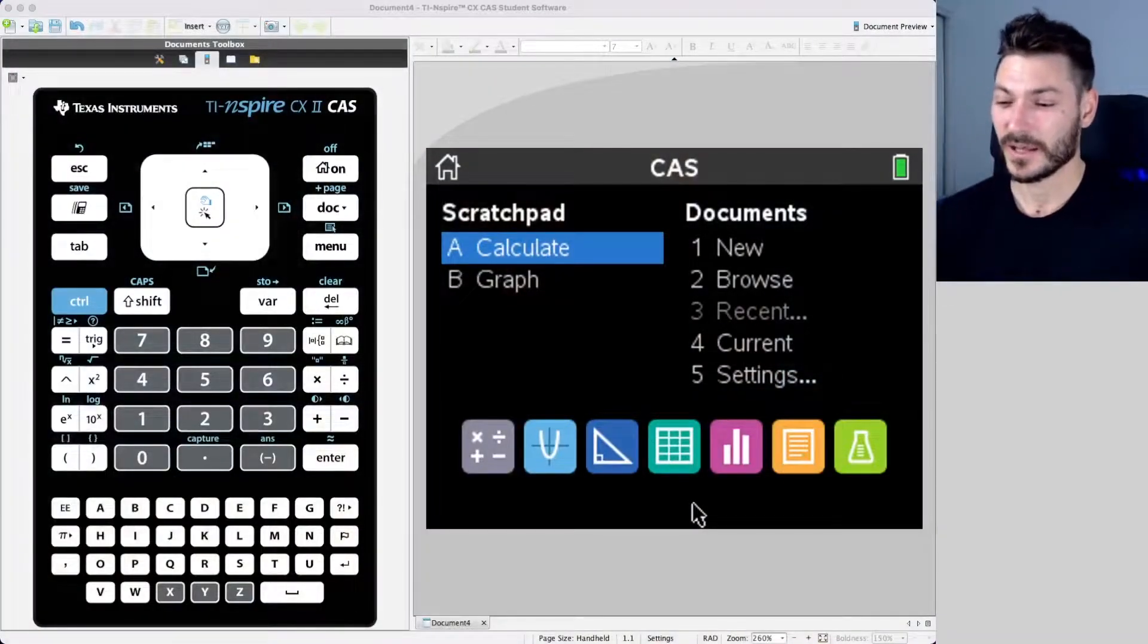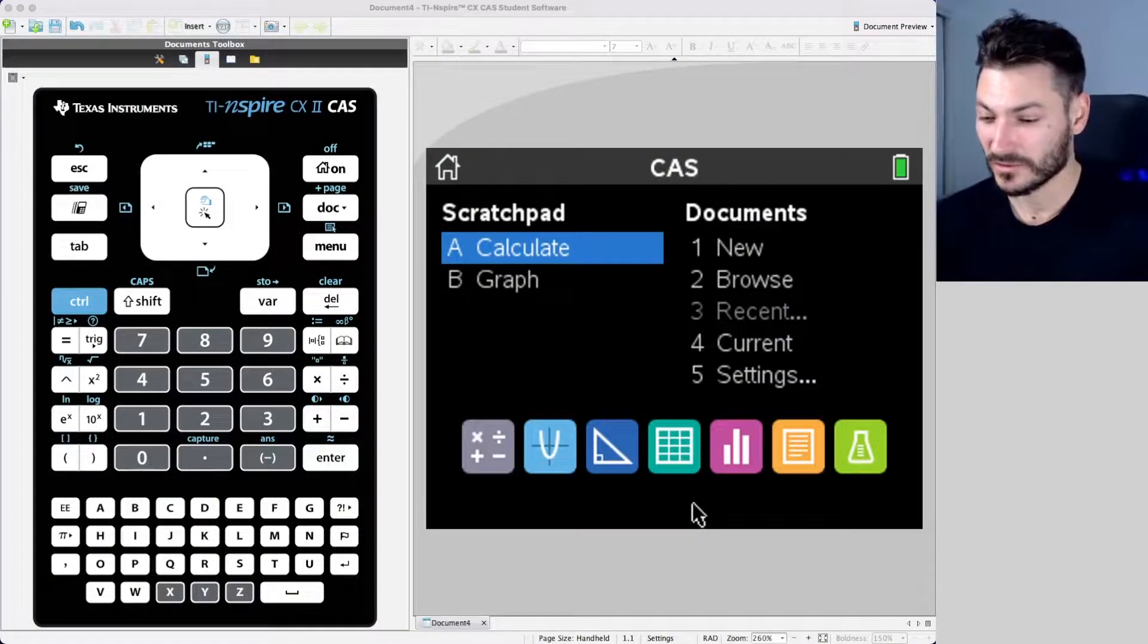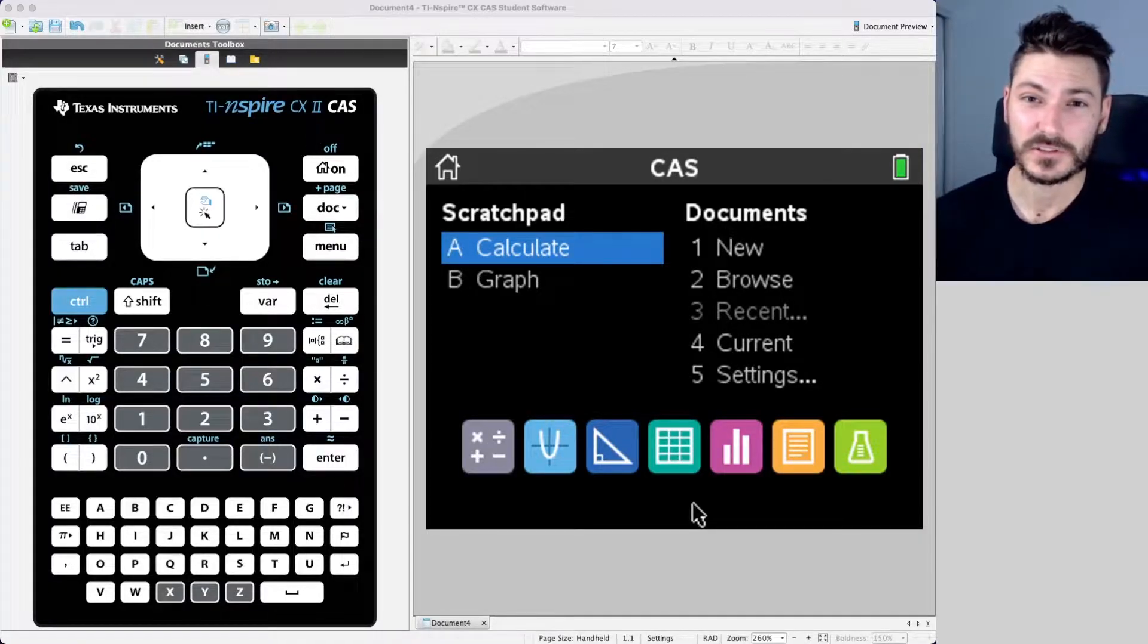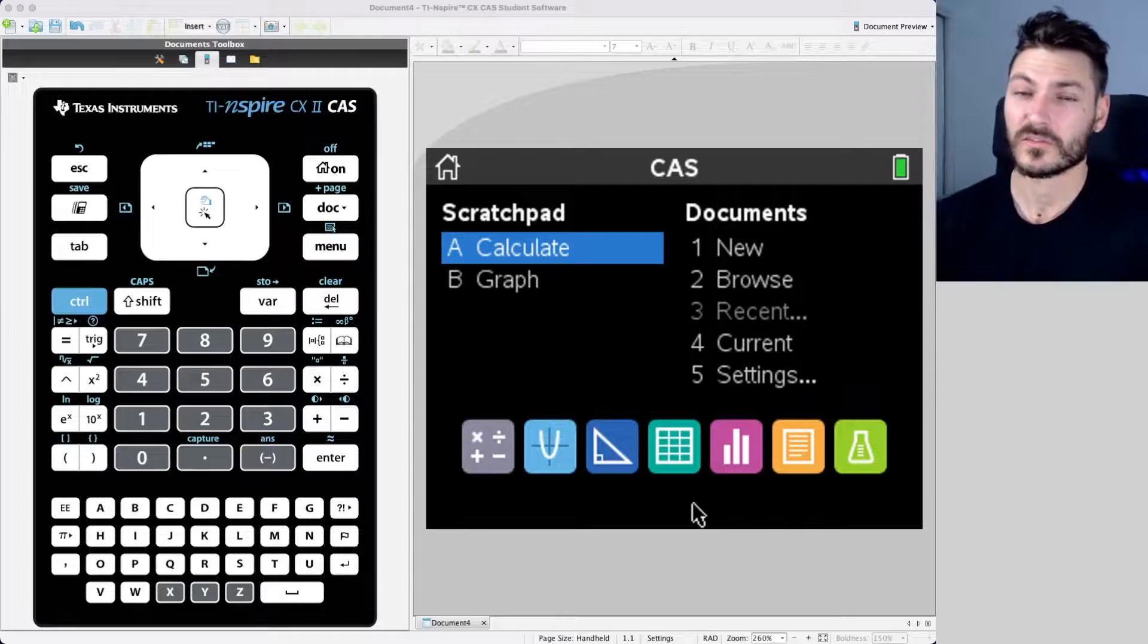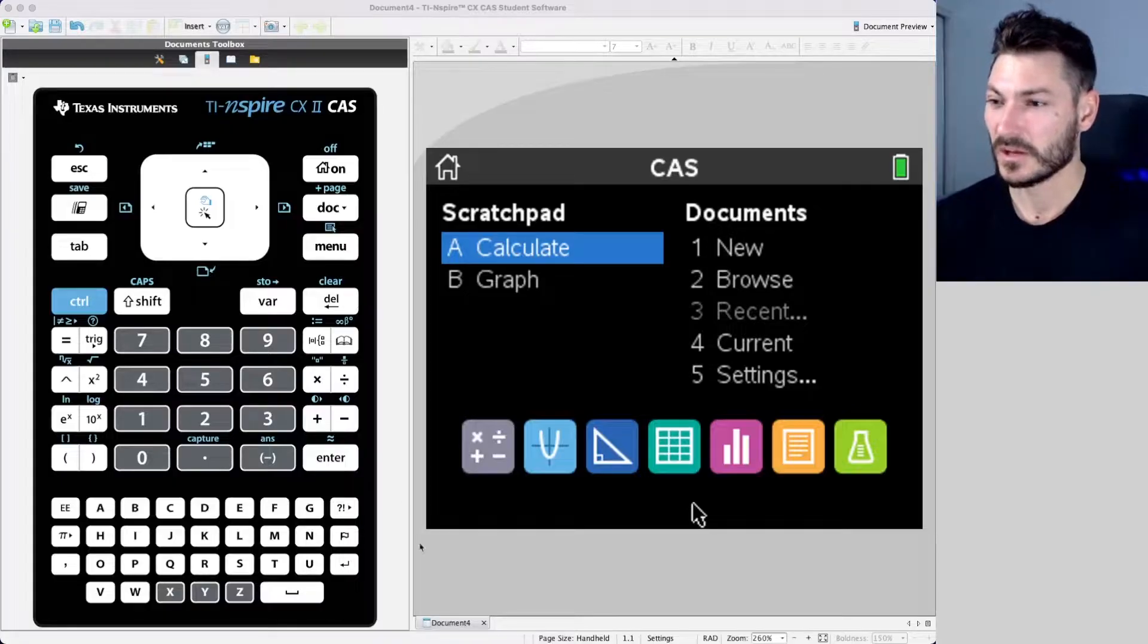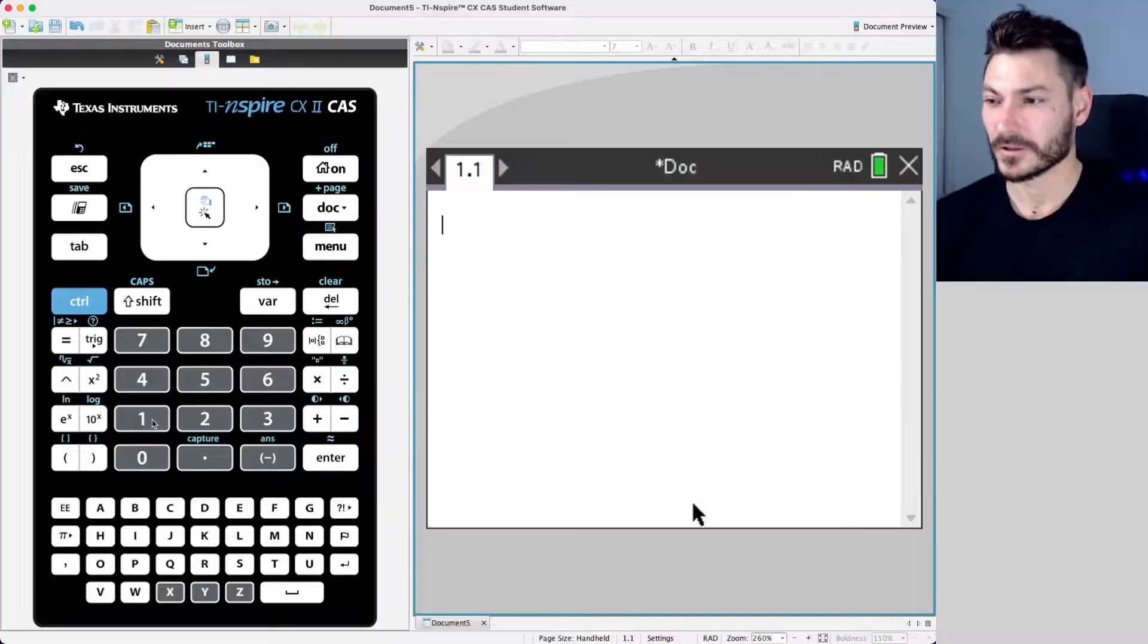Okay, so here is my calculator, my TI-Inspire CX2 CAS software. This is the exact same as the handheld version. I don't have this one in test mode, however, everything I do in this video you can do in test mode, so never fear. Let's dive in. I'm going to go to a new document and I'm going to add a calculator.